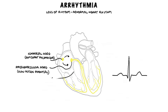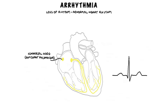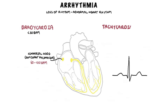The sinoatrial node sets the normal heart rate at about 60 to 100 beats per minute. Brady arrhythmias is a resting heart rate less than 60 beats per minute. Tachy arrhythmias are essentially abnormal heart rates greater than 100 beats per minute.